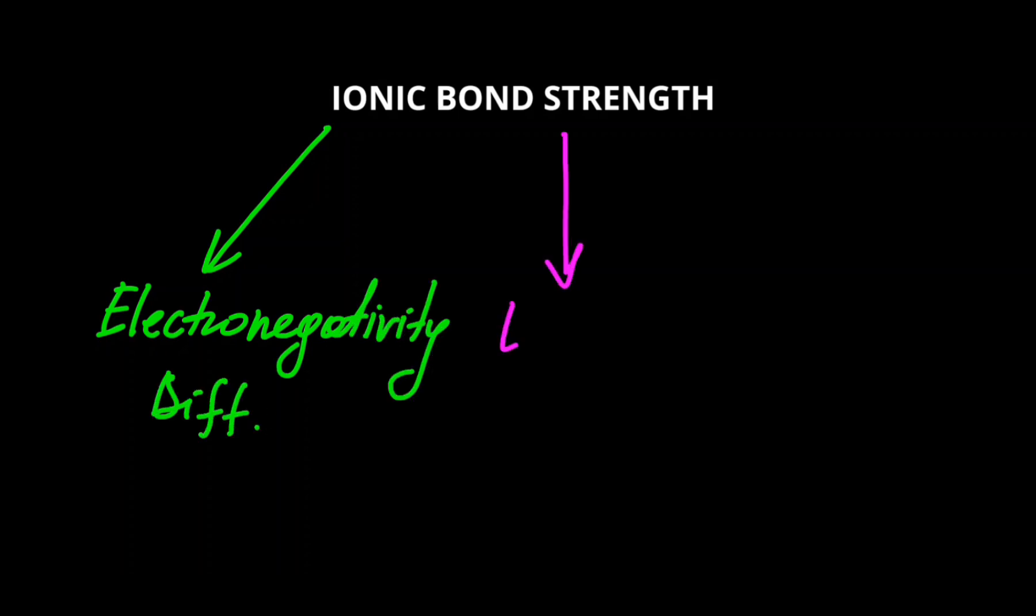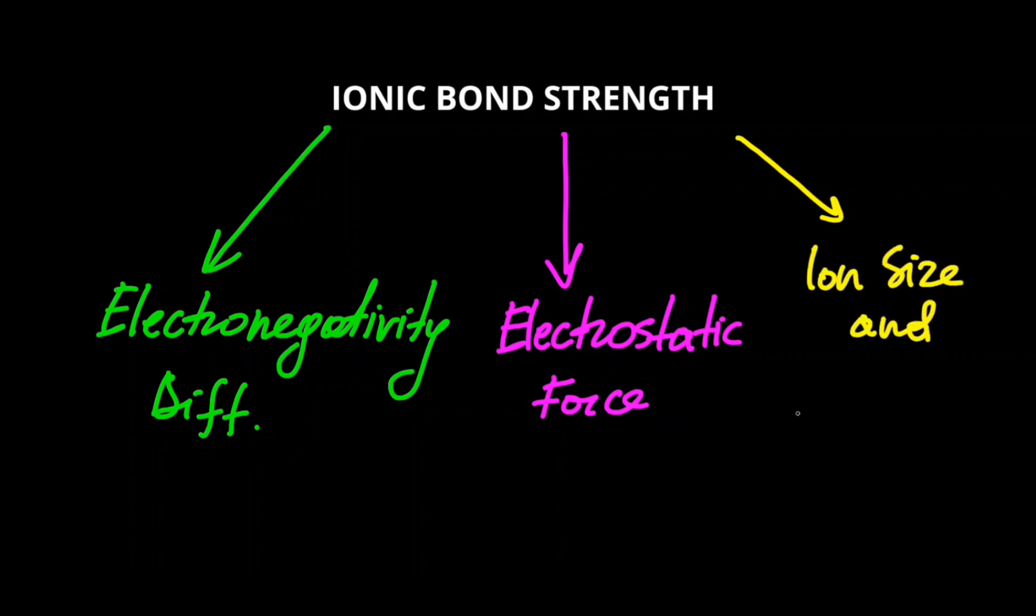First is electronegativity difference, then we have electrostatic force, and lastly ion size and lattice energy. Let's break these factors down to understand how they influence ionic bond strength.